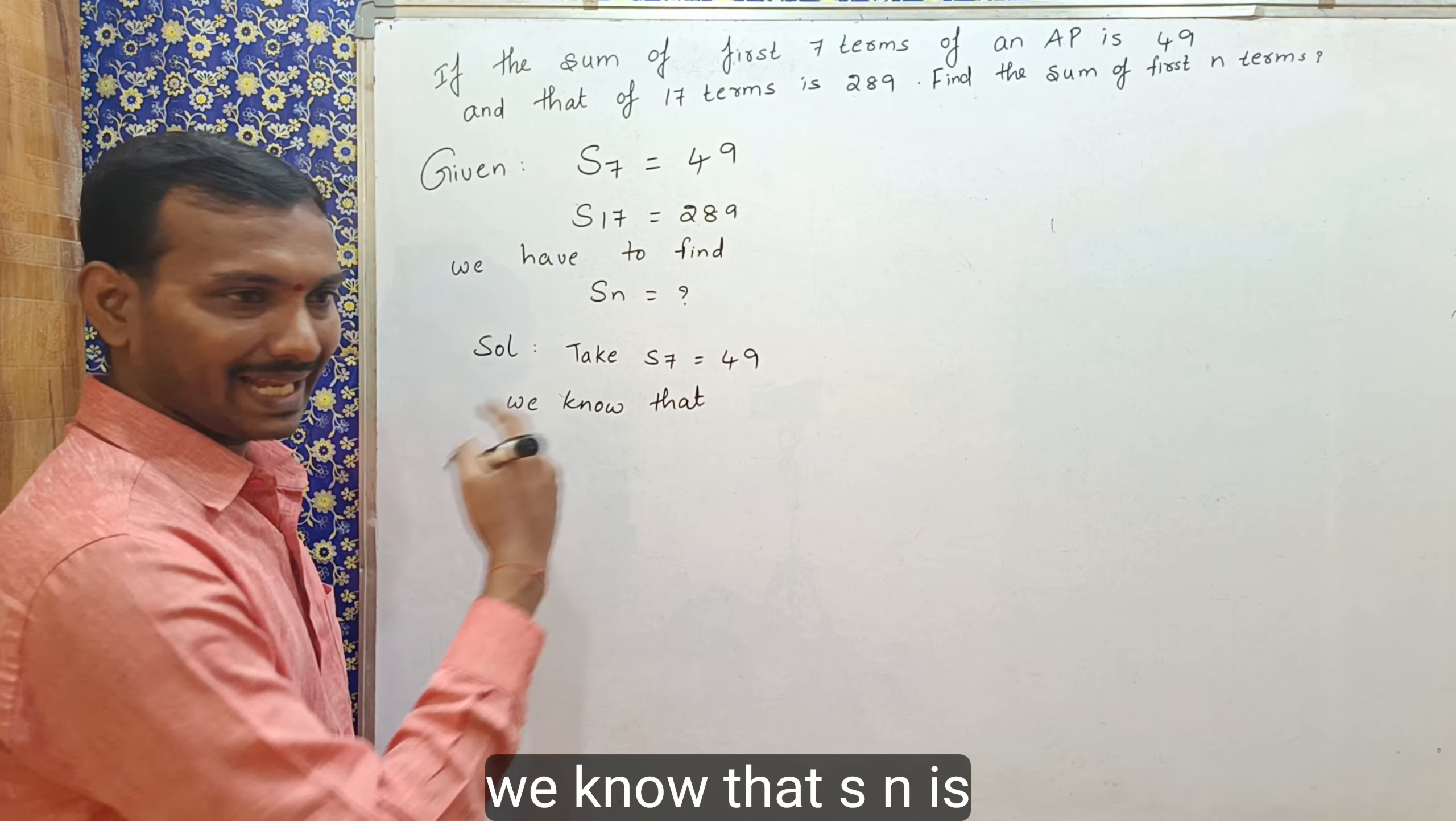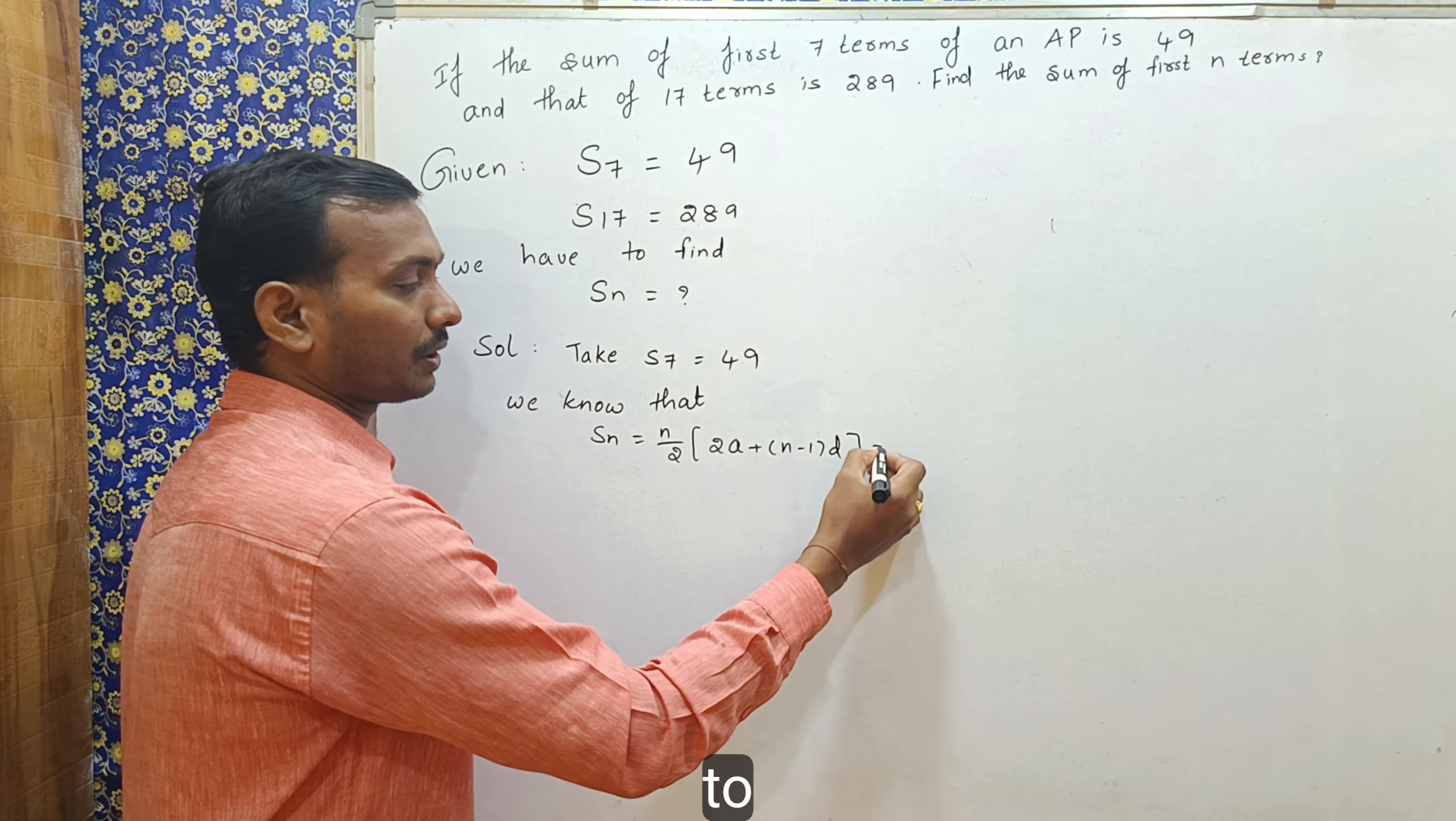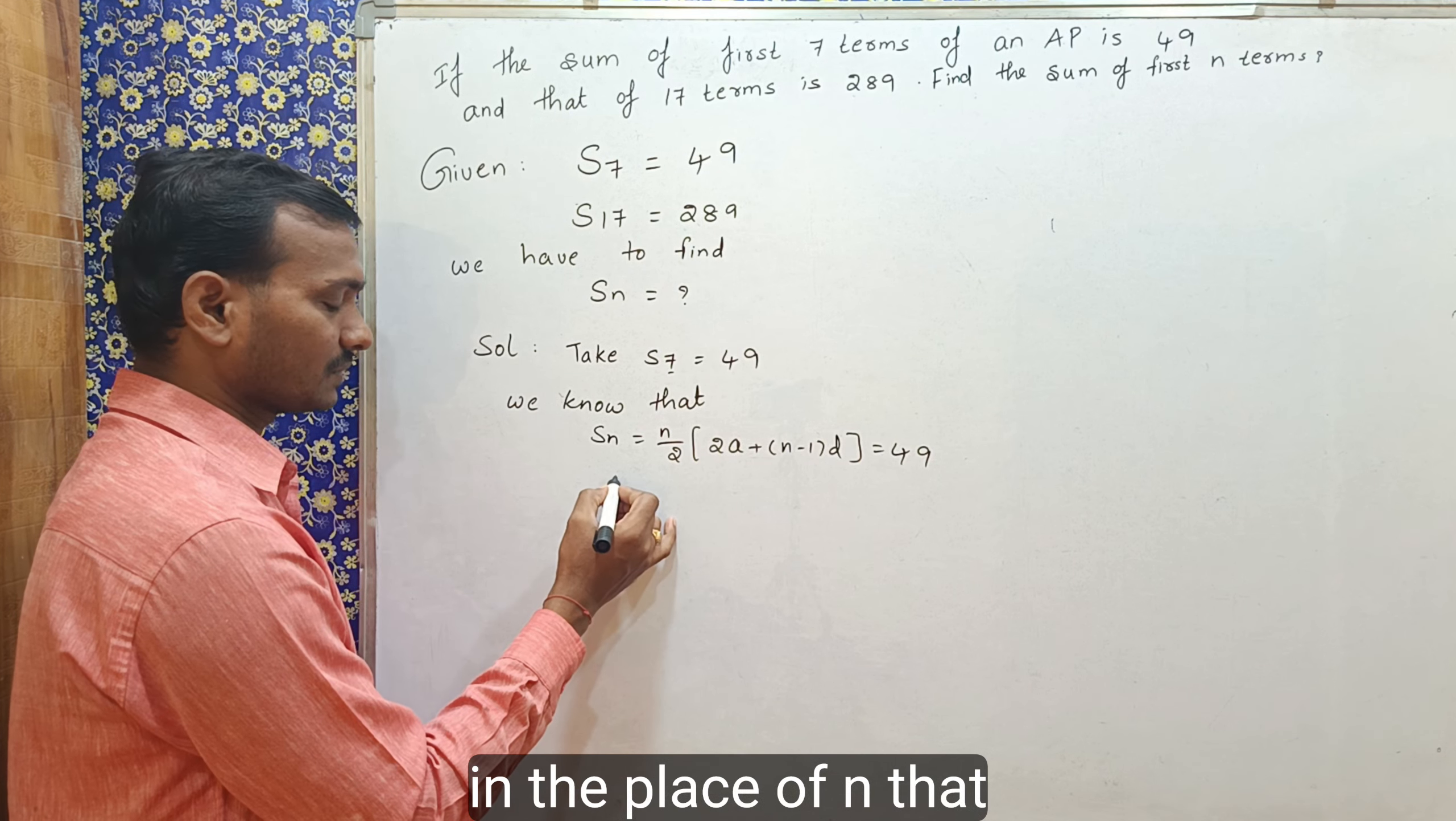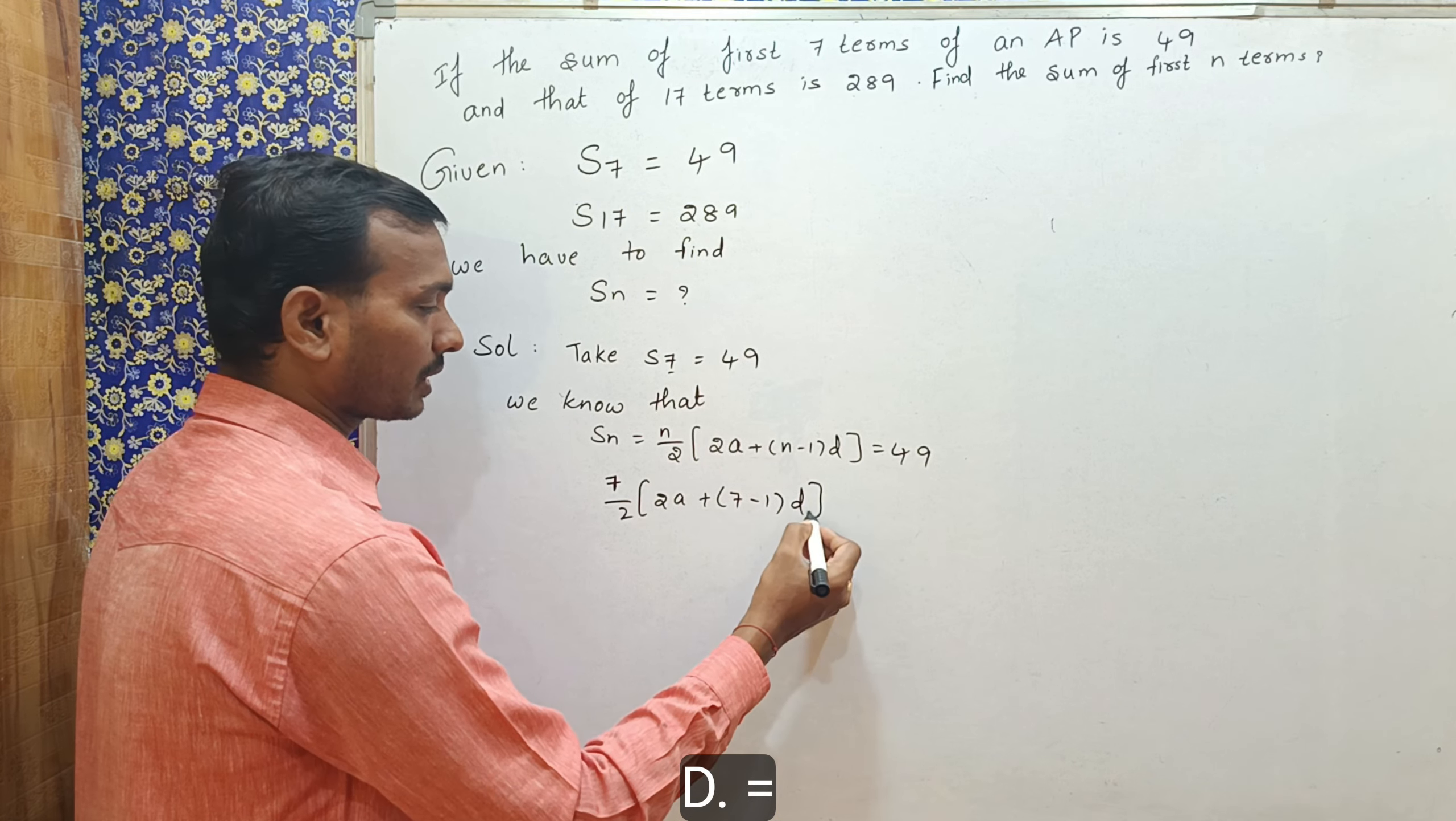S7 is equal to 49. We know that Sn is nothing but n by 2, 2a plus n minus 1 into d is equal to 49. So, from this we will substitute 7 in the place of n. That is, 7 by 2, 2a plus 7 minus 1 into d is equal to 49.